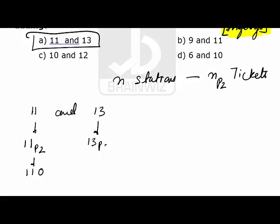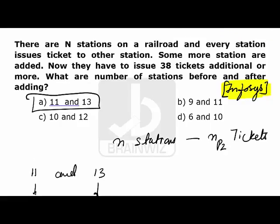13P2 results to 156. Now we can see that the number of tickets which increased is 46, but he told in the question that there are 38 additional tickets, which is not matching with the question. So option first is wrong.